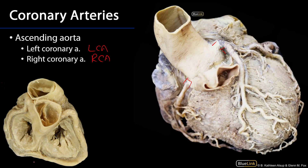Looking at this illustration — posterior is here and anterior is here — we can see the ascending aorta and the cusps of the aortic valve. Here is the right aortic sinus and the RCA. Here is the left sinus and the LCA. The LCA runs up against the pulmonary trunk before ramifying into the anterior interventricular artery and the circumflex branch.